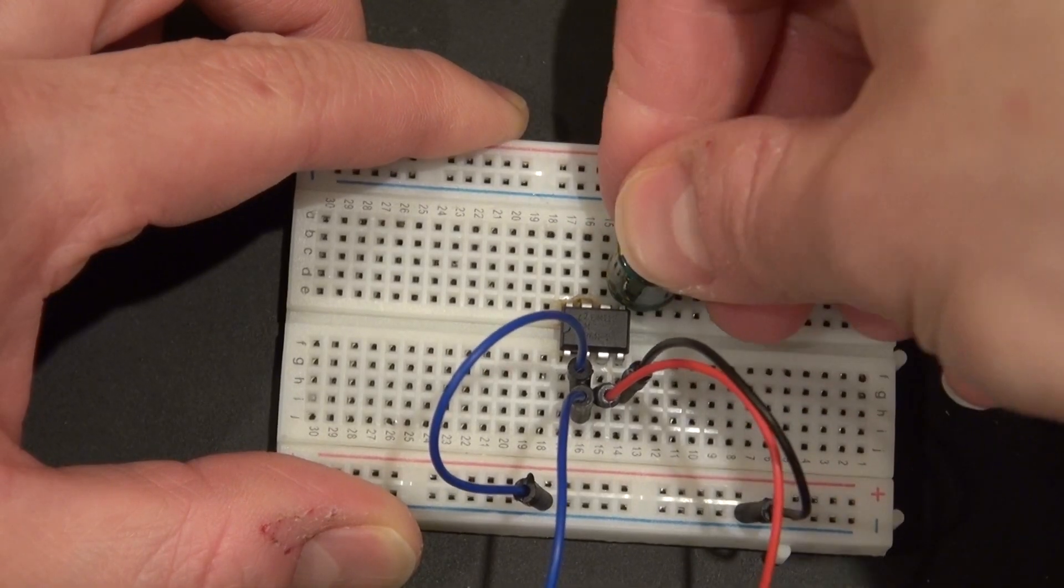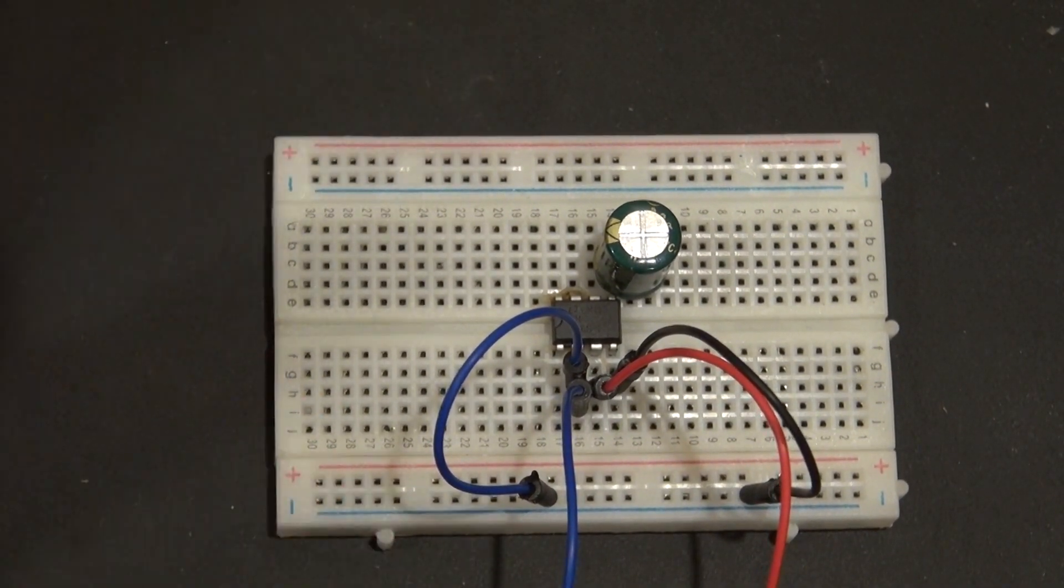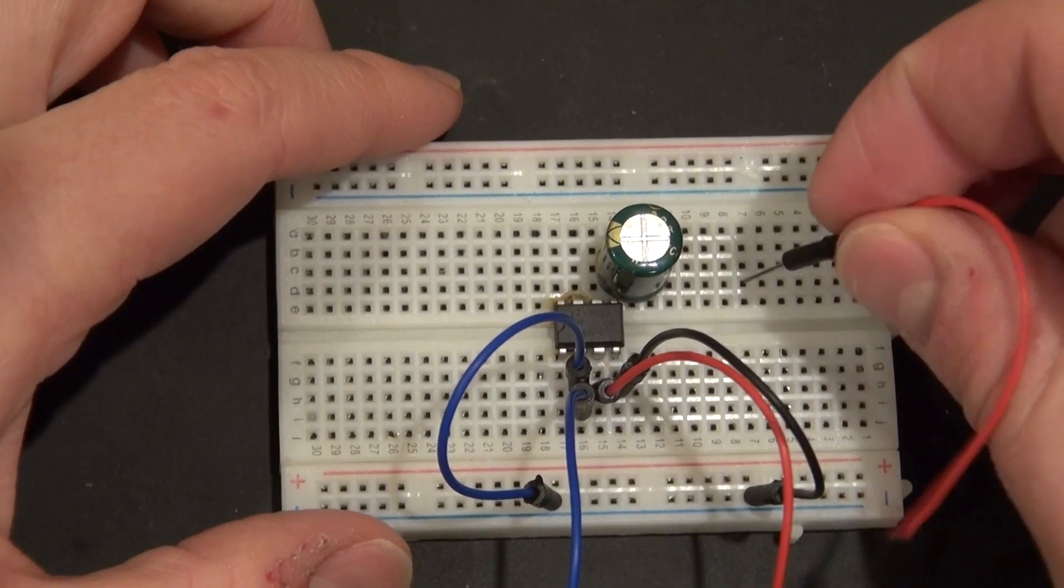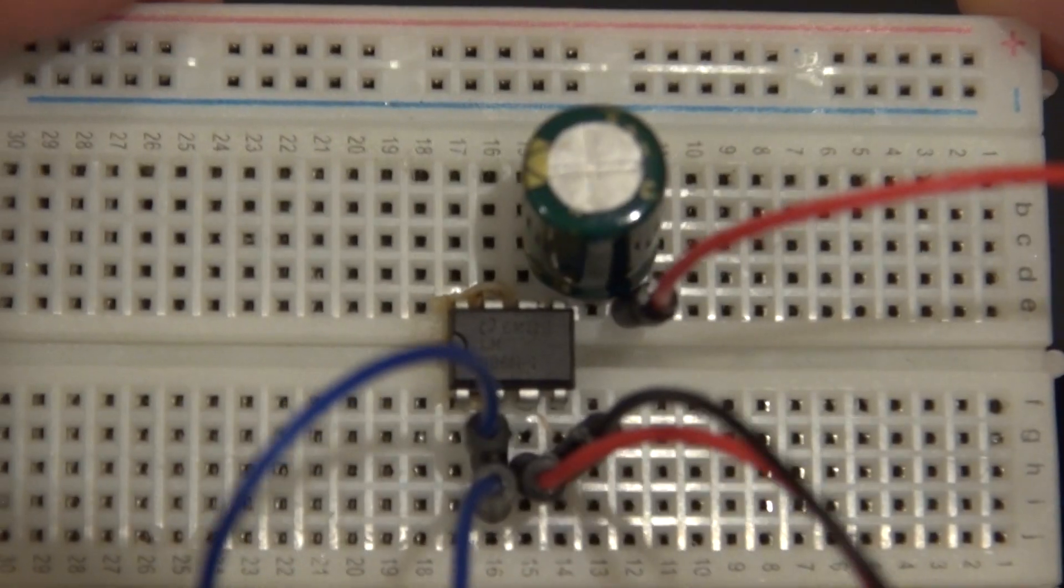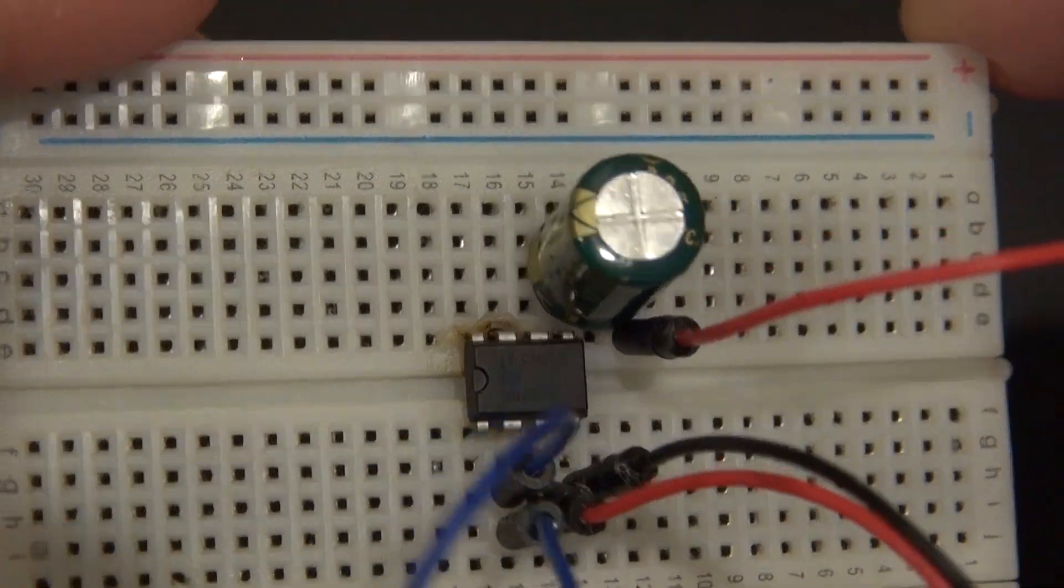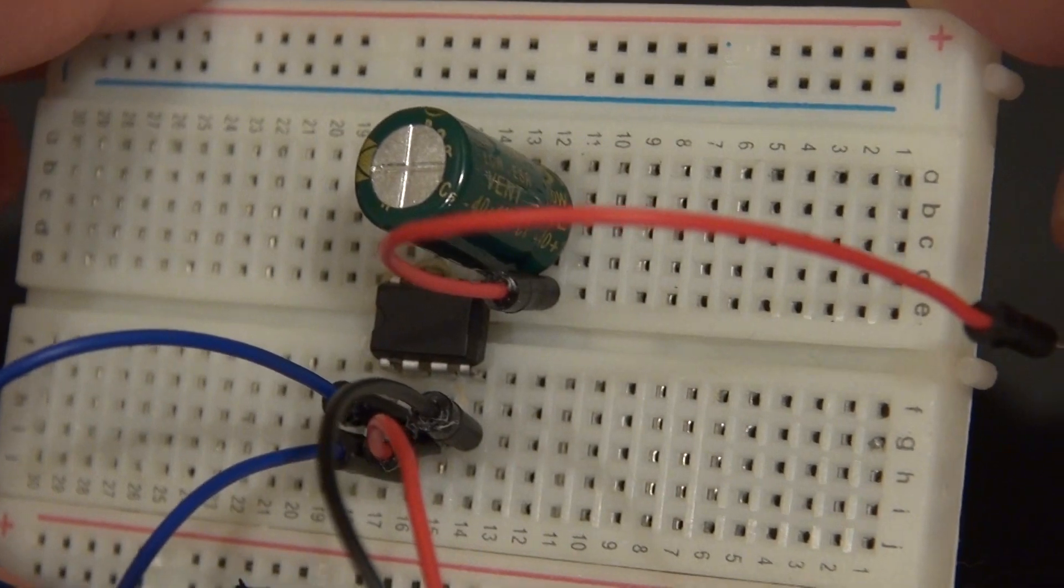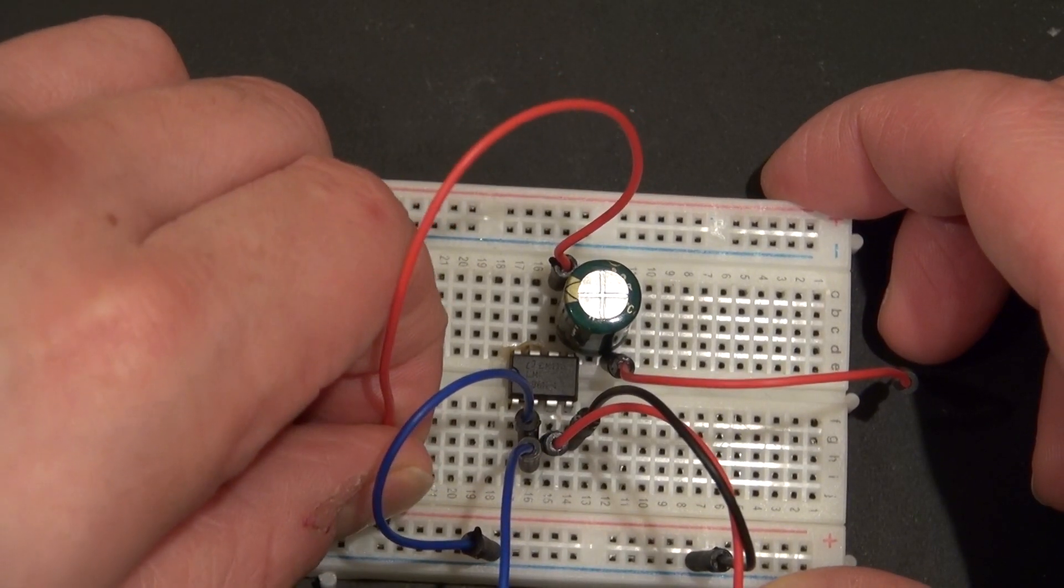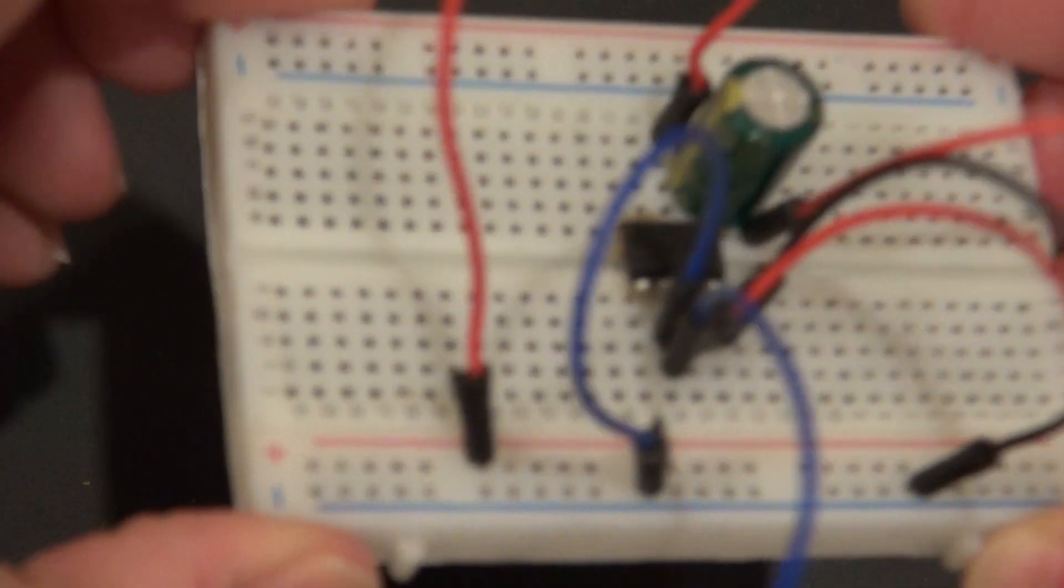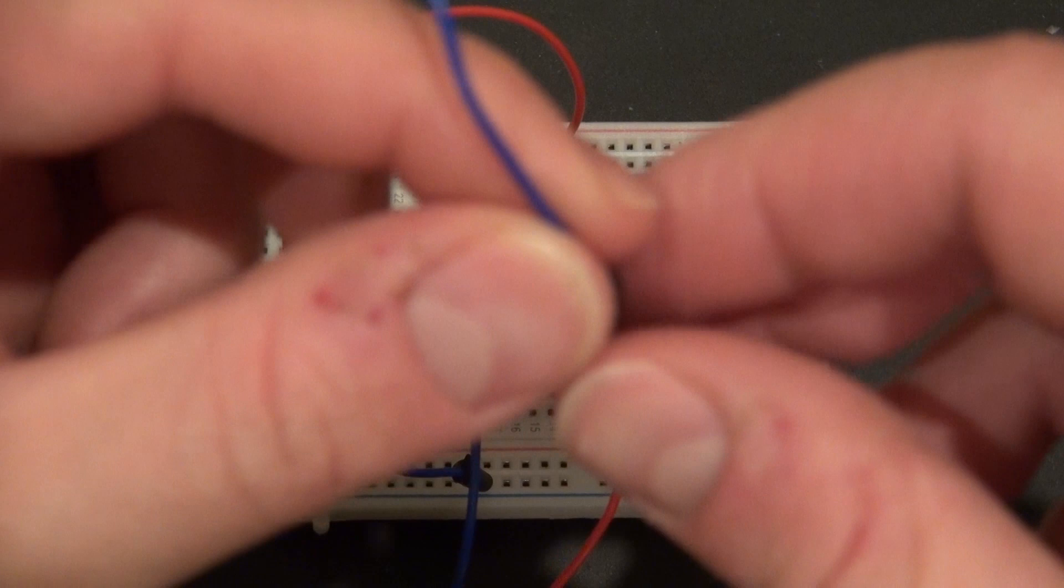I have my 1000 microfarad capacitor connecting negative to pin 5. And now attach a jumper cable connected to the positive of the capacitor and leave that wire loose. And it should look just like that. Now I'm going to connect a jumper wire from pin 6 to positive. And it should look just like this.